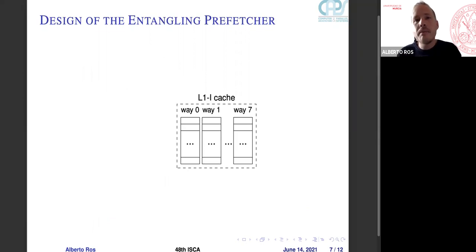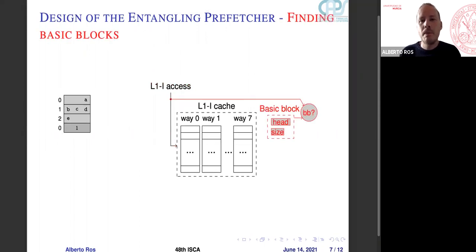So this is the concept of entangling prefetcher, and I'm going to explain the implementation. Here we have an L1 instruction cache, 8 ways, 32 kilobytes we use in our simulation. And we have an access. First thing that we do is find the basic block. So we use two registers: one to track the head of the basic block, the address of the head, and the current size of the basic block. So for example, when we access A, then B, C, D, they will be in the same basic block. So if we access B and then we access C, they belong to the same line, and we don't do any modification in these two registers.